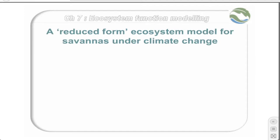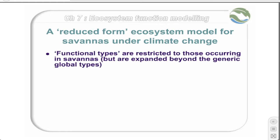Ecosystem models can often be very complicated, requiring hundreds of parameters. Is it therefore possible to make a simple one just for African savannas that is nevertheless realistic in its main features? This was attempted, and it's called a reduced form model.